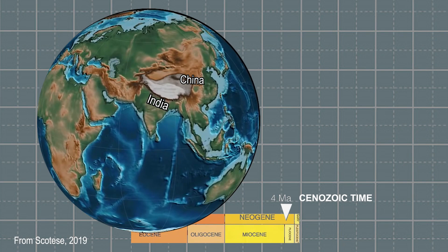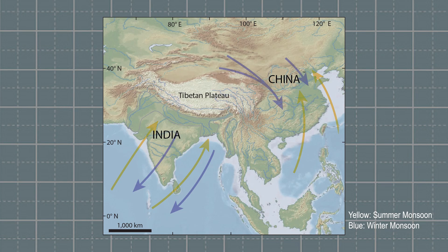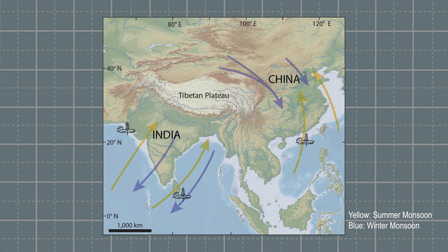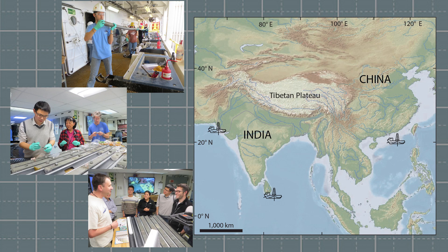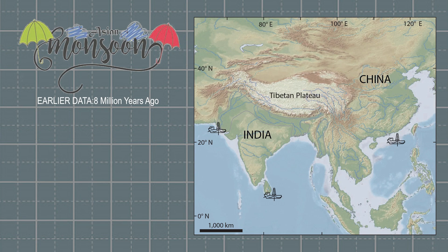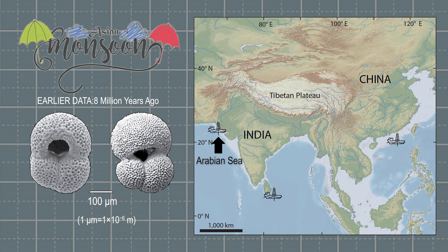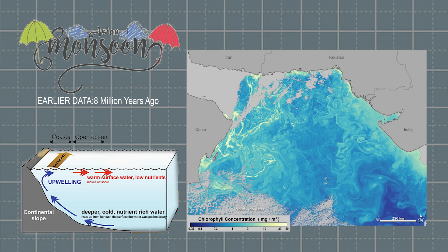The monsoon greatly affected the climate of Asia, and this climate history is preserved in Cenozoic sediments. These sediments are exposed onshore and are also found in the nearby Indian Ocean and South China Sea, where they have been sampled through scientific drilling. For many years, researchers interpreted the Cenozoic sediment record to indicate that the monsoon started around 8 million years ago. This conclusion was based on microfossils in Arabian Sea sediments, linked to oceanic upwelling and phytoplankton blooms caused by the monsoon.